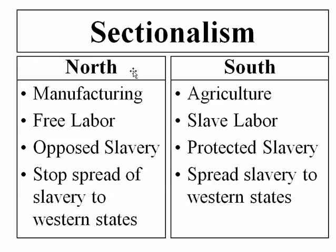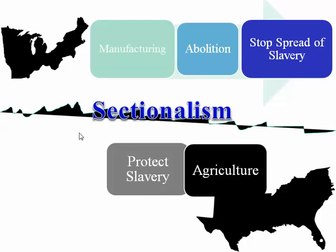Northerners opposed Southerners and Southerners opposed Northerners. The North's economy was based on manufacturing; the South's on agriculture. The North used free labor; the South used slave labor. The North opposed slavery; the South wanted to protect it. The North wanted to stop the spread of slavery westward; the South wanted to ensure it spread westward with manifest destiny. These differences caused sectionalism — these North-South tensions that were going to rip the country apart and cause a civil war.